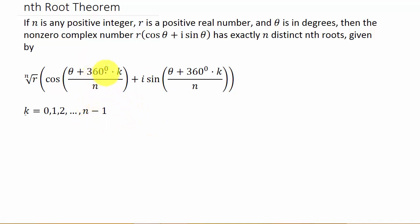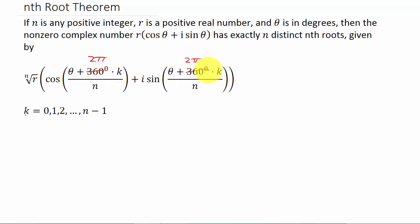Now let me say this: you can also do this if your angle is in radians. If your angle is in radians, instead of 360 you would just have 2 pi k — it would be 2 pi instead of 360. The example I'm going to do is going to be in degrees, but it works the same way.